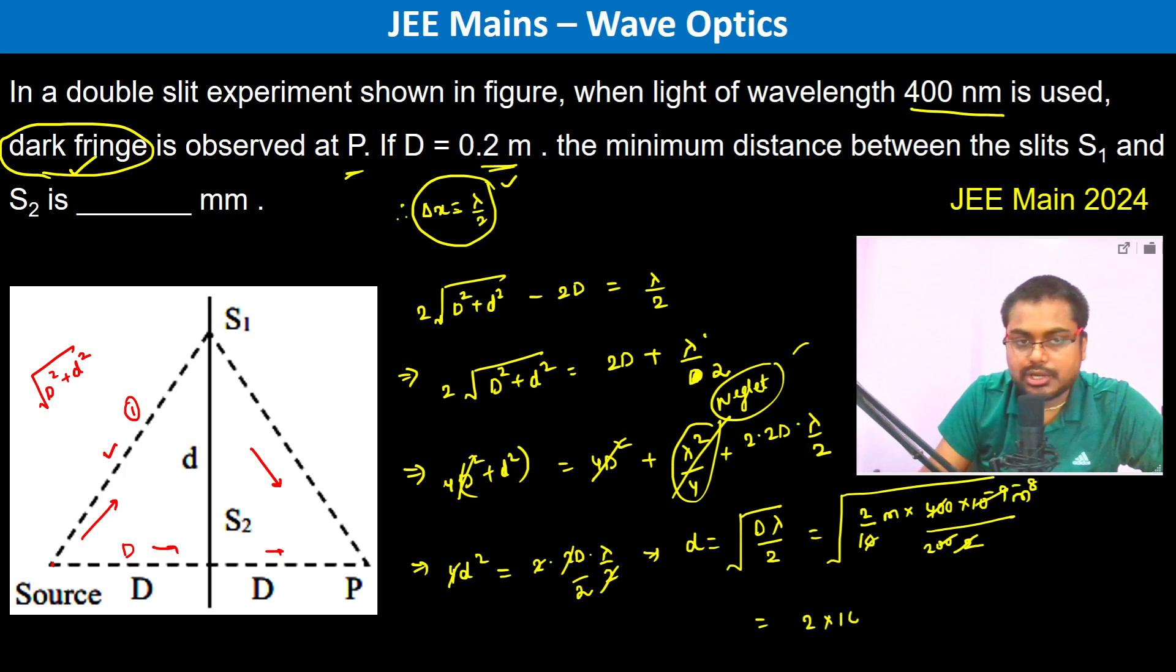This is going to be 2 into 10 to the power minus 4 meter. So this is 2 into 10 power minus 4 meter, which is 2 into 10 power minus 1 millimeter.